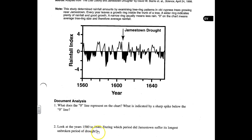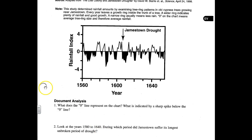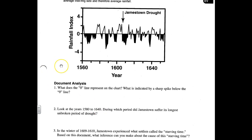Question two: looking at the years 1580 to 1640, during which period did Jamestown suffer its longest unbroken period of drought — the longest period of drought without a break in rainfall? If you study the document, it should be pretty easy to recognize the period between 1580 and 1640 in which Jamestown suffered its longest period of drought.